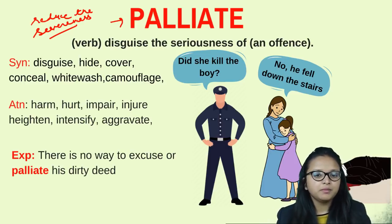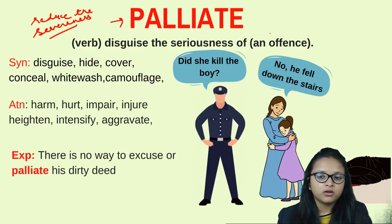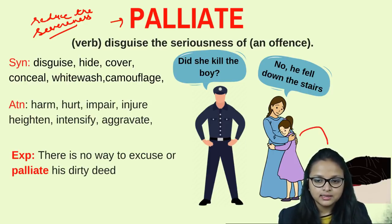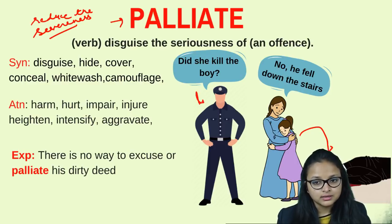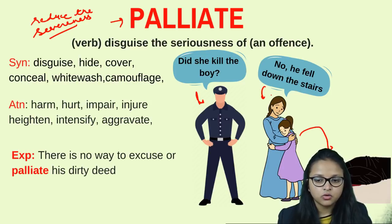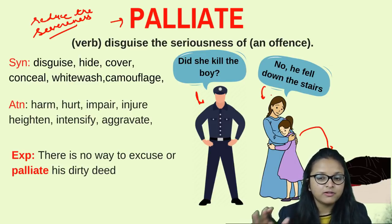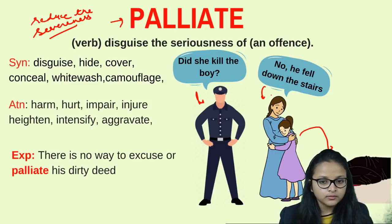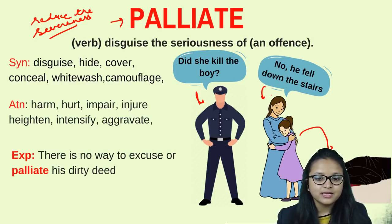The second meaning of palliate is to disguise the seriousness of an offense. For example, imagine a girl is suspected of killing a boy. An officer asks the mother if she did it, and the mother says, 'No, he fell down the stairs.' The mother is trying to disguise or cover up the seriousness of the offense — that is palliate.